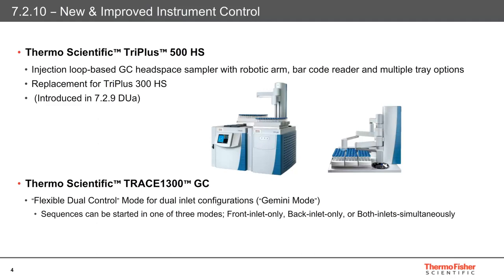This essentially allows sequences to be started in one of three modes: front inlet only, back inlet only, or both inlets simultaneously. In addition to this new feature, the Flame Ionization Detector now supports data acquisition rates of up to 600 Hz to improve application performance.